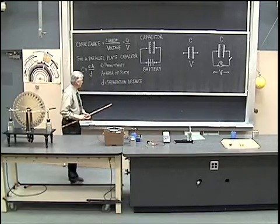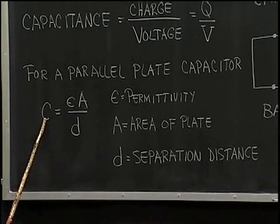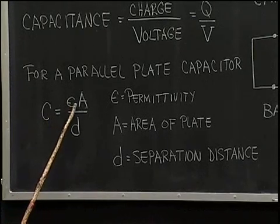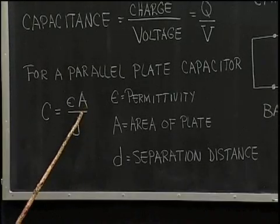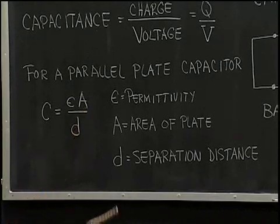To summarize, capacitance is equal to the permittivity constant multiplied by the area of either plate divided by the separation distance between the two plates for the parallel plate capacitor.